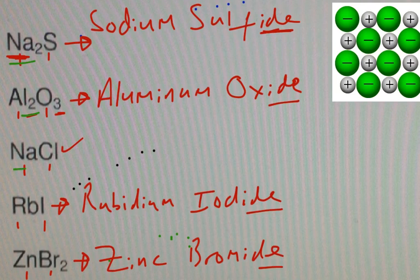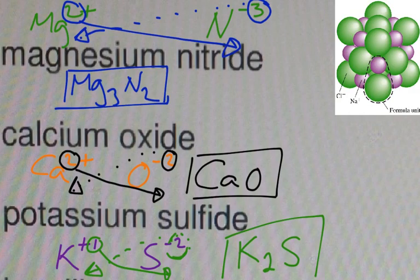And if you're given a name and asked for a formula, you simply just do it like this with a crisscross.